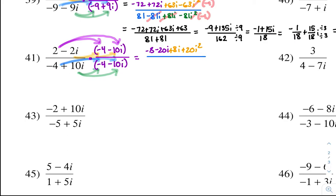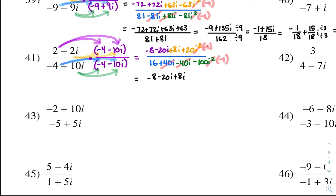All over — blue: negative 4 times negative 4 is 16, and negative 4 times negative 10i is positive 40i. Green: 10i times negative 4 is negative 40i, and 10i times negative 10i is negative 100i squared. The 40i and negative 40i cancel. The i squareds become negative 1. So we have 20 times negative 1 for negative 20, all over 16. And negative 100 times negative 1 is positive 100.